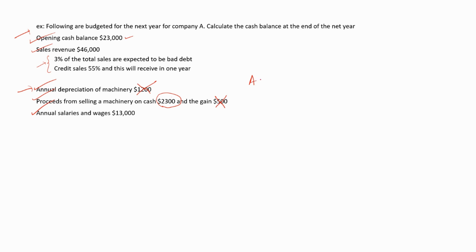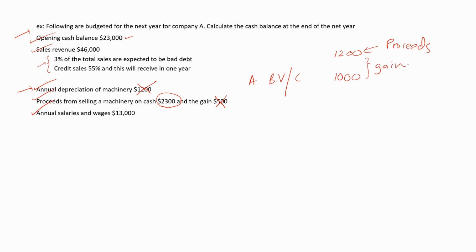What is the gain? Let's say there is a machine A. The book value or the cost of this machine is $1,000. And the company has managed to sell this machinery for $1,200 — this is the proceeds. We consider the proceeds value under the cash budget, but we do not consider the gains or losses under the cash budget.